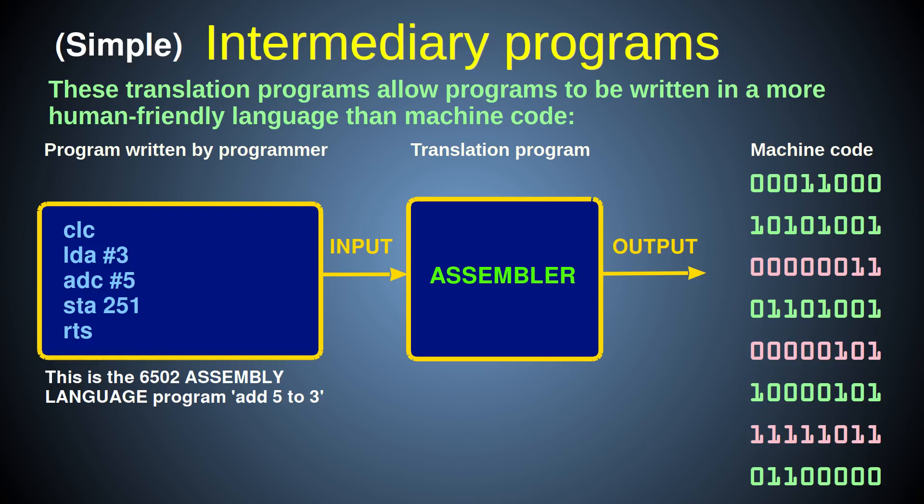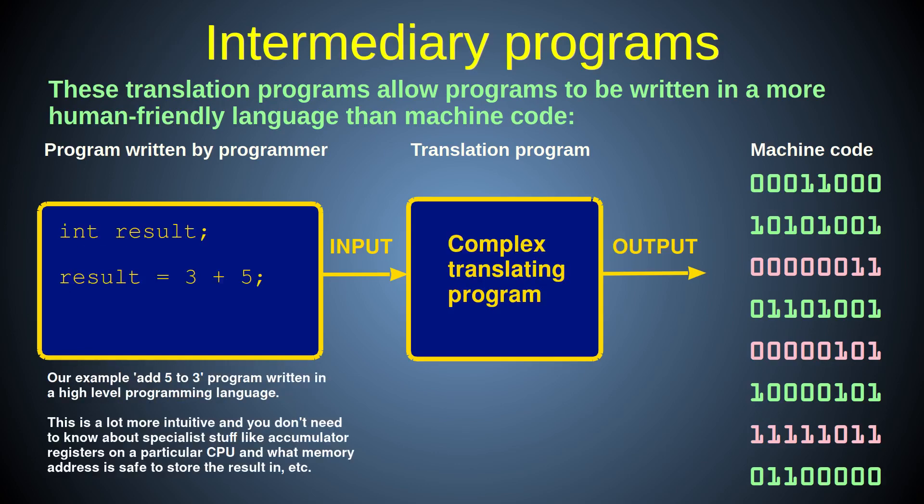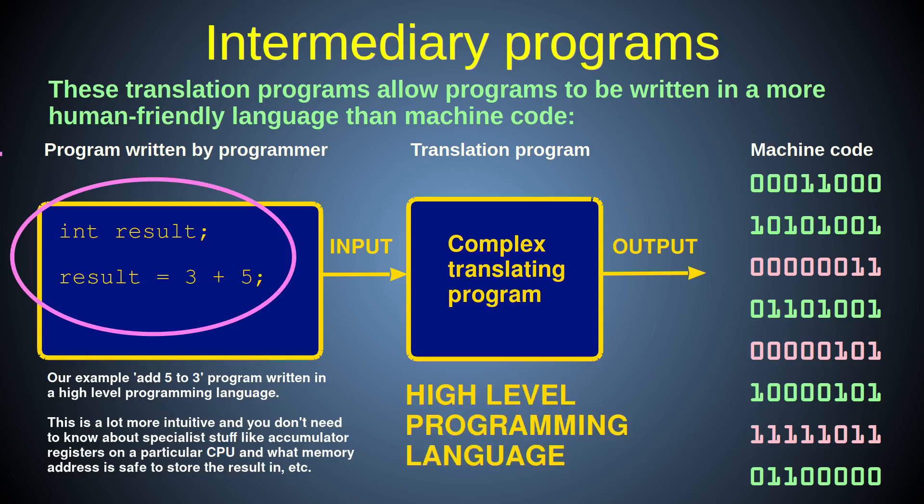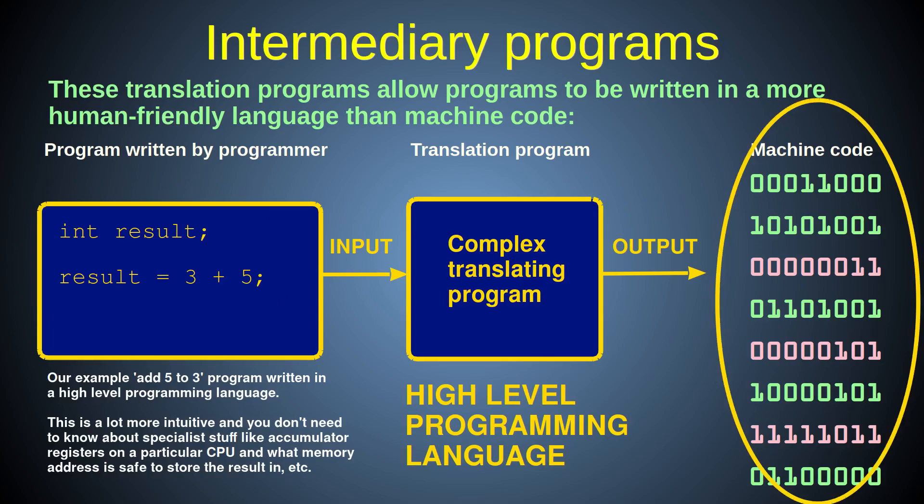By developing more complex intermediary programs that would take in more natural language instructions and convert those instructions into machine code. Such complex intermediary programs became more practically realizable as the power and memory capacity of computers grew, so that the computers could actually store and run such complex translation programs. The input to these complex translator programs would be files containing programs written using programming languages that more closely resemble natural English language and logic, called high-level programming languages, and the output would be pure machine code ready to run on the computer.